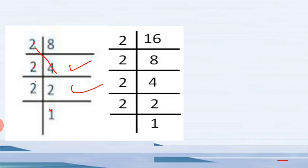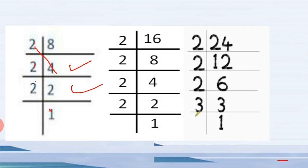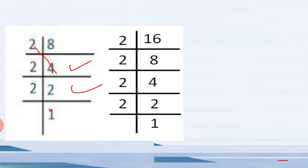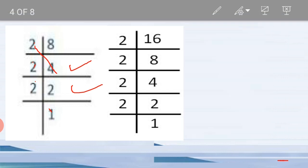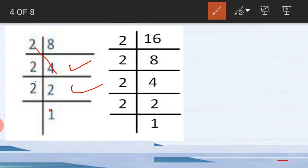Next we have to find the prime factors of sixteen. Two eights are sixteen, so we start with two. Now we have eight: two fours are eight. Now we have four: two twos are four.